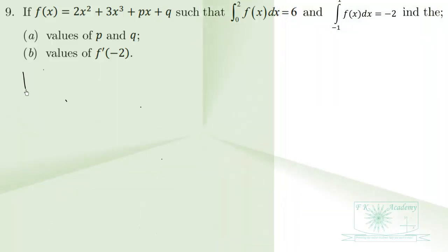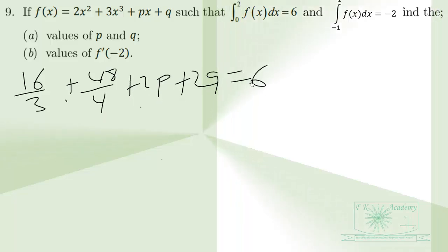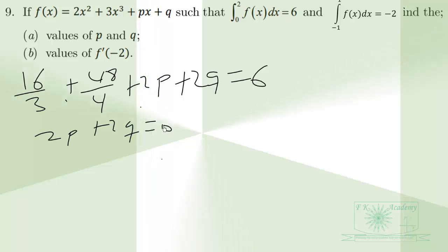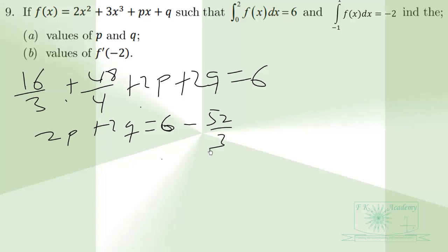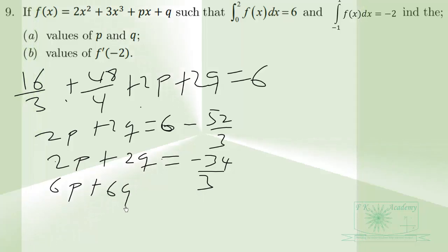This gives us 16 over 3 plus 48 over 4 plus 2p plus 2q equals 6. Simplifying, we get 2p plus 2q equals 6 minus 52 over 3, which equals negative 34 over 3. Multiplying through by 3, we obtain 6p plus 6q equals negative 34. We call this Equation 1.